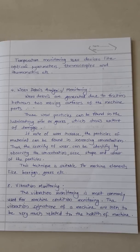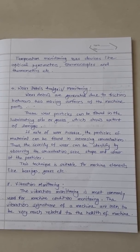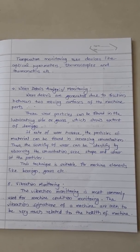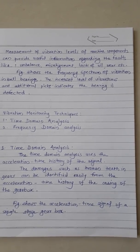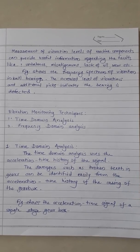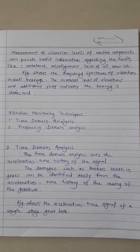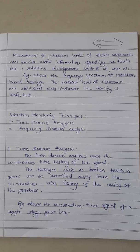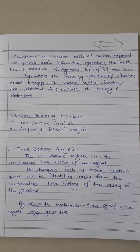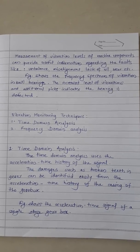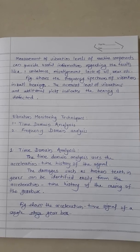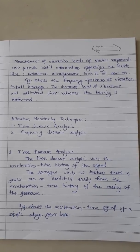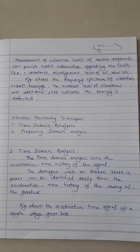Vibration monitoring is most commonly used for machine condition monitoring. The vibration signatures of the machine are seen to be very much related to the health of the machine. Measurement of vibration levels of machine components can provide useful information regarding faults like unbalance, misalignment, lack of oil, wear, etc. When vibration levels are measured, conditions like unbalance, misalignment, insufficient lubrication, and wear and tear can be identified. This information can be measured by vibration.